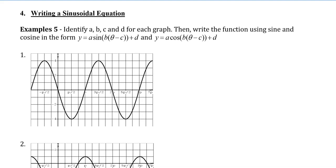Let's take a look at this first graph here. We can see that our central axis is right on the x-axis. By looking at this, we can see that the amplitude, whether we measure from the top to the central axis or from the central axis to the minimum point, the amplitude is 4. It doesn't matter whether it's a sine or cosine graph — the amplitude will still be 4.